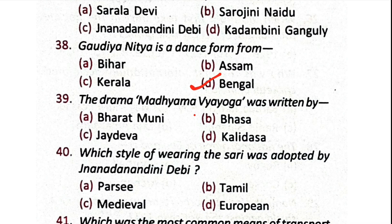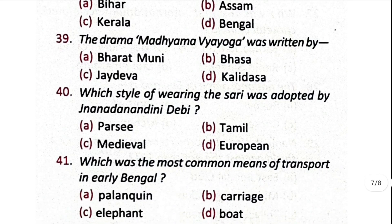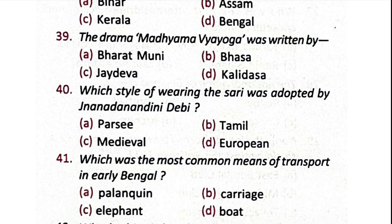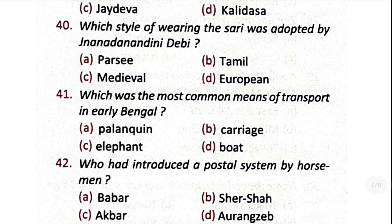Question number 39: the drama 'Madhyama Bhayoga' was written by — the correct answer is B, Bhasa. Question number 40: which style of wearing the saree was adopted by Gyanandini Devi? The correct answer is A, Parsi. Question number 41: which was the most common means of transport in early Bengal? The correct answer is D, boat.